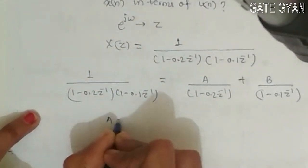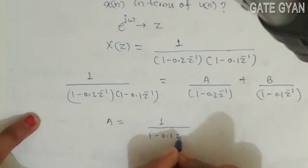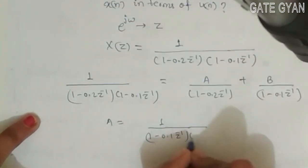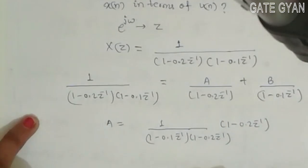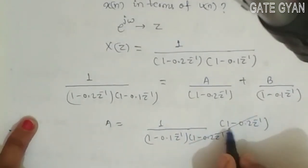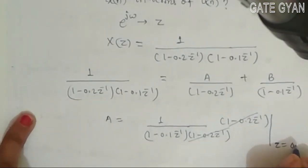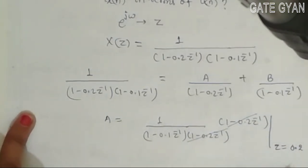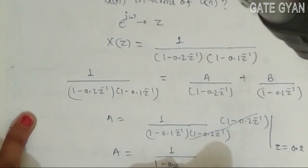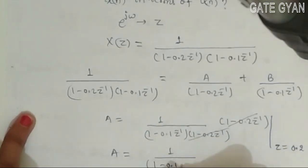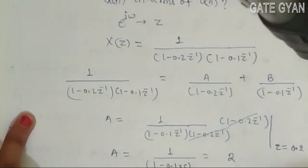And from here I will find my A and B. So my A will be... it will cancel and this value I have to find, that z is equal to 0.2, or I will say z^-1 will become 5. 1 minus 0.1z^-1 will become 1 minus 0.5, that will give me 2.